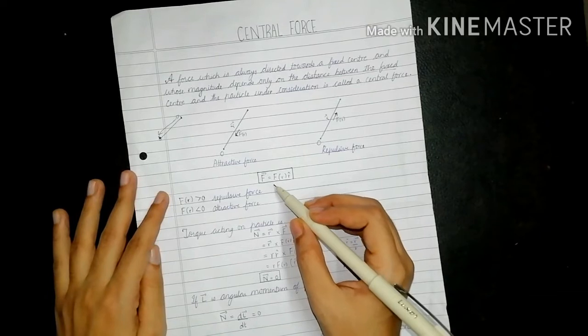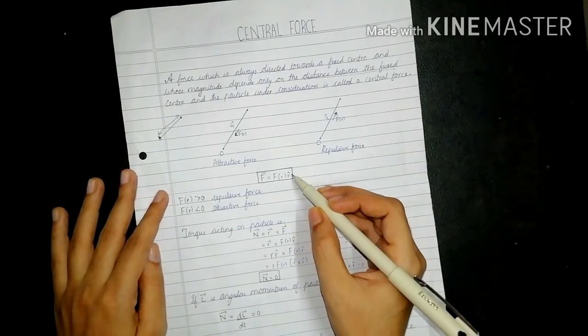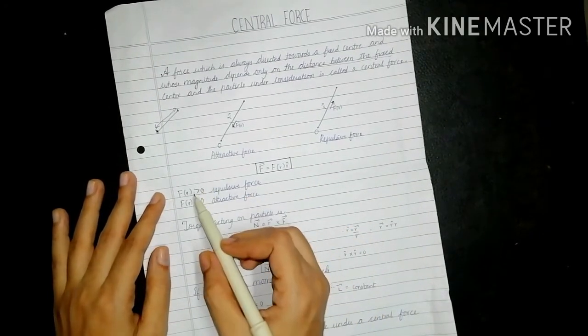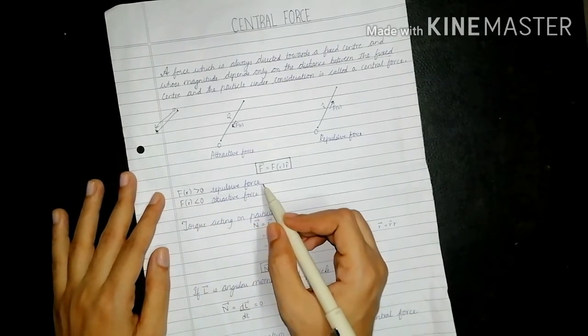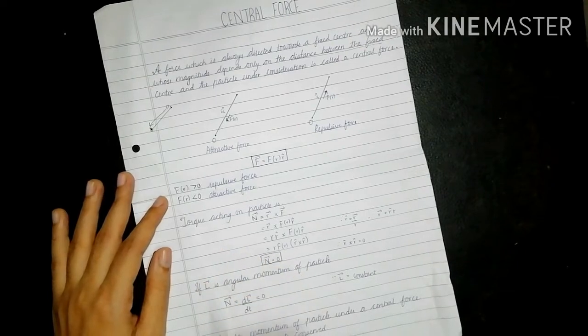So force f bar could also be represented as f of r, r cap, position vector. When f of r would be greater than 0, then it would be repulsive force. And if f of r is less than 0, then it would be attractive force.